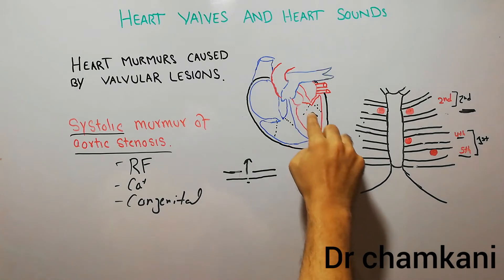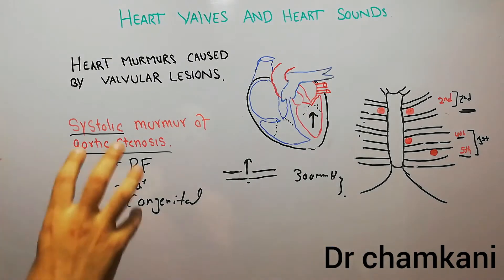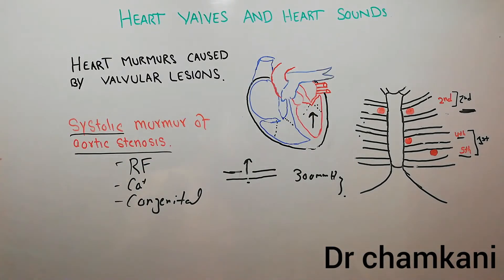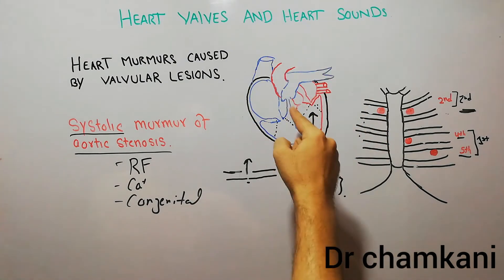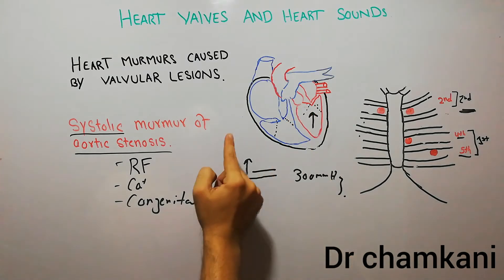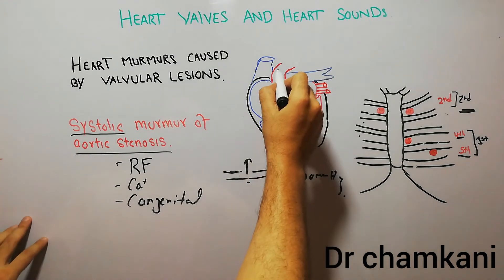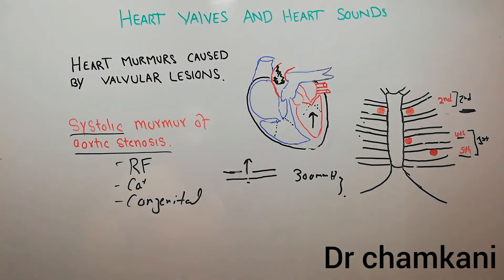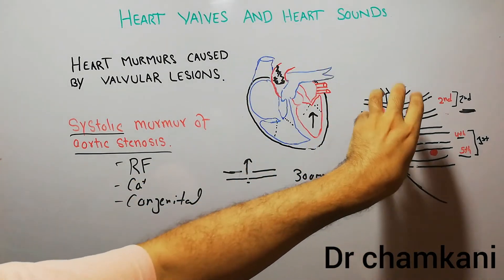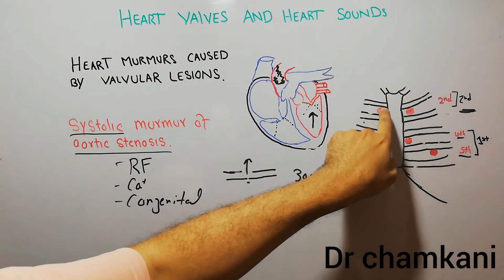In systole, blood moves from the left ventricle into the aorta, so the murmur of aortic stenosis is systolic in nature — it is heard in systole, not diastole. The increased pressure of blood through the small area creates a jet effect in the aorta. The blood moving at high speed strikes the walls of the aorta, and the sound is prominently heard in the aortic area.